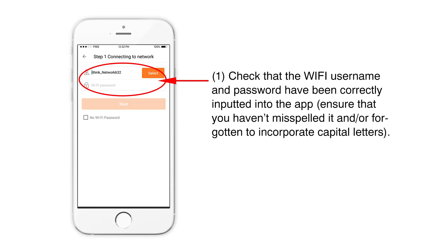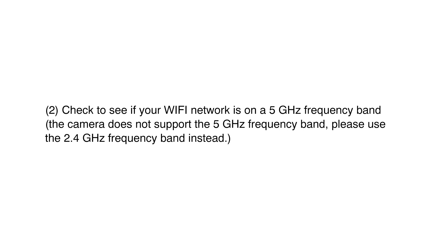Solution 1: Check that the Wi-Fi username and password have been correctly inputted into the app. Ensure that you have not misspelled it or forgotten to incorporate capital letters. Solution 2: Check to see if your Wi-Fi network is on a 5GHz frequency band. The camera does not support the 5GHz frequency band. Please use the 2.4GHz frequency band instead.